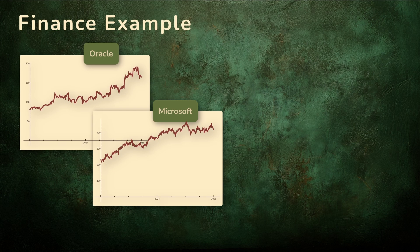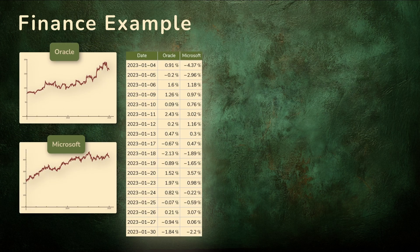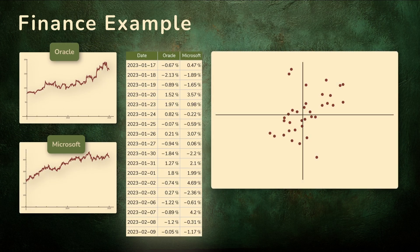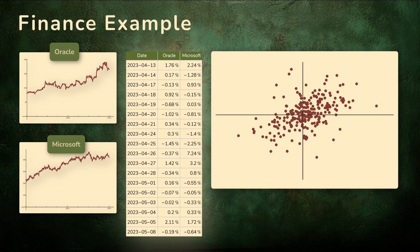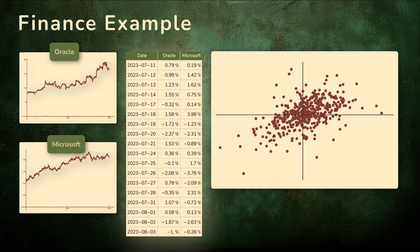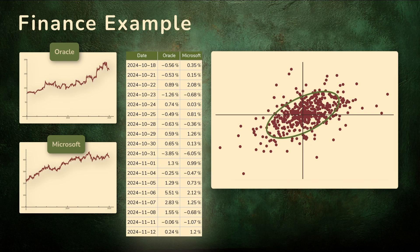We'll arrange these daily returns in pairs, one number for Oracle and one for Microsoft for each trading day. If we display these pairs of returns on a scatter plot, we get a shape that's not just a random cloud. Instead, we see a kind of tilted oval pattern.